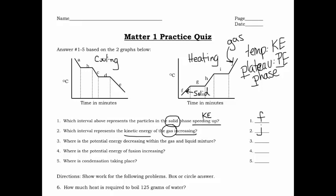Number three: where is potential energy decreasing within the gas and liquid mixture? That's going to be one of the plateaus decreasing, so we're talking about the cooling curve. At a plateau you're going through a phase change — two phases of matter are occurring. The top plateau is gas becoming a liquid, so that's your gas and liquid mixture. This phase change is actually condensation — that's where it's condensing. That would be letter B.